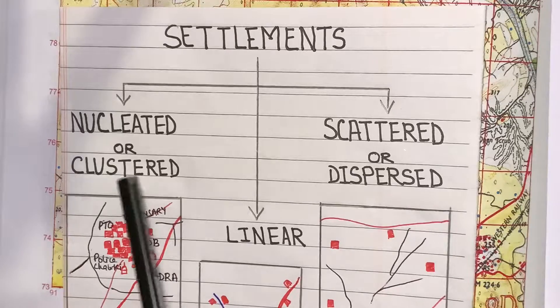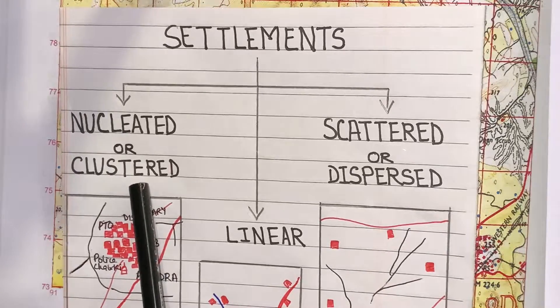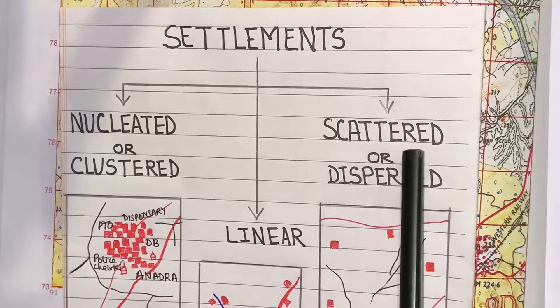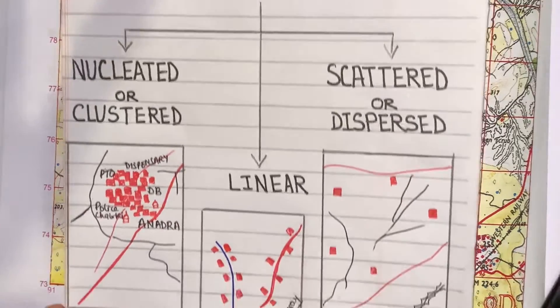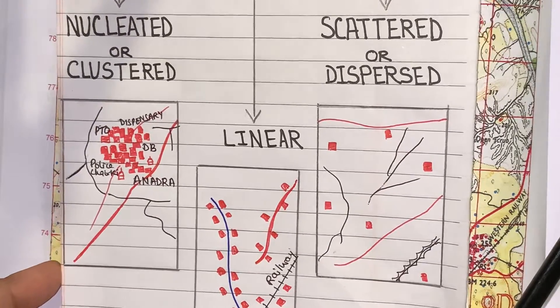Now, three different types we have: nucleated or clustered, linear, and the third one is scattered or dispersed. I have drawn these three boxes for you.